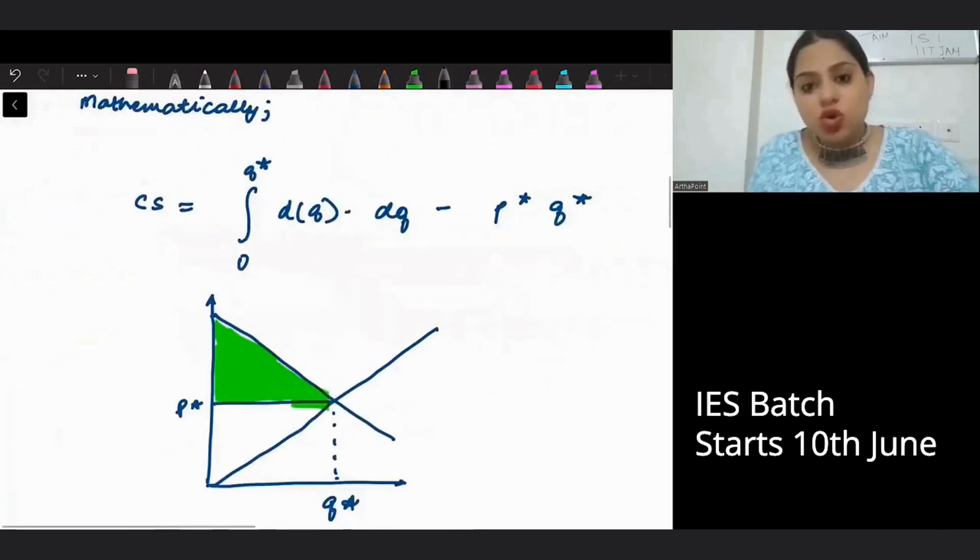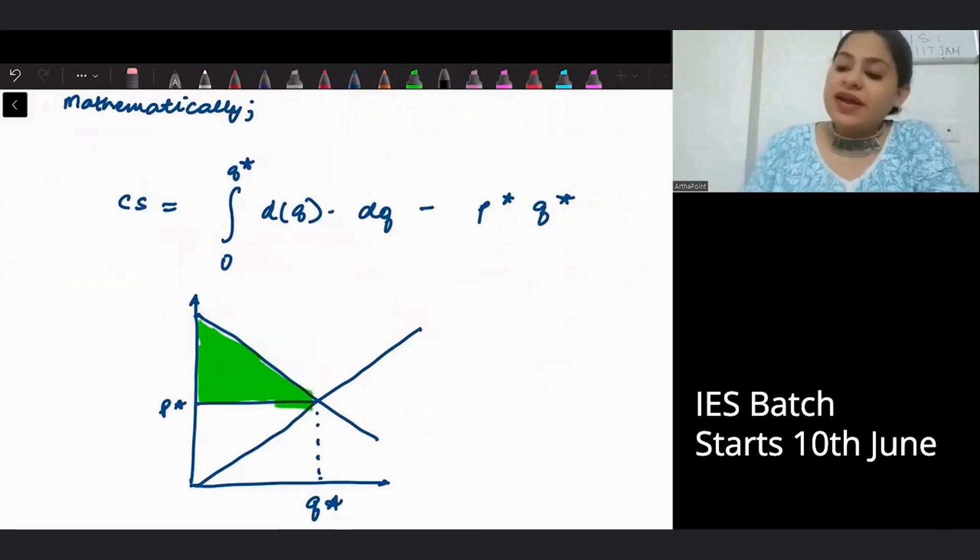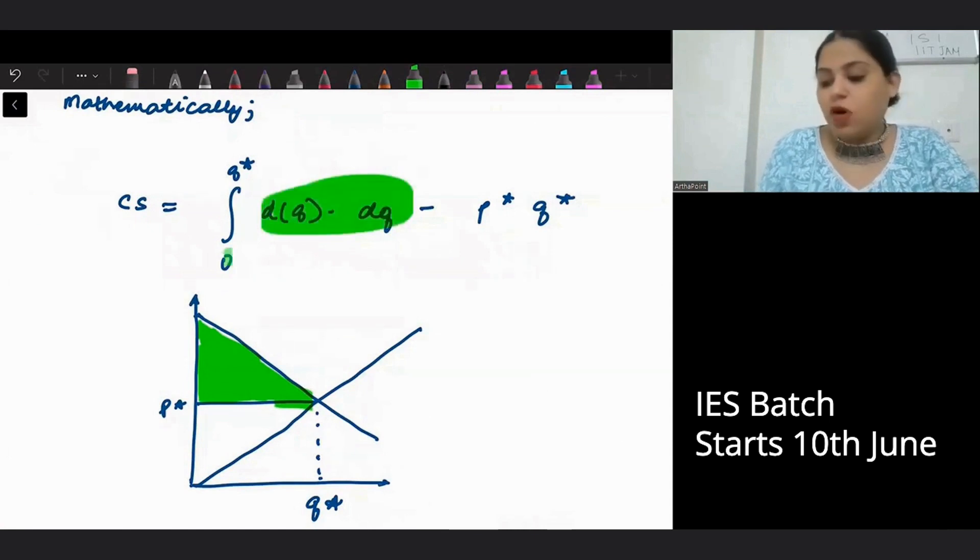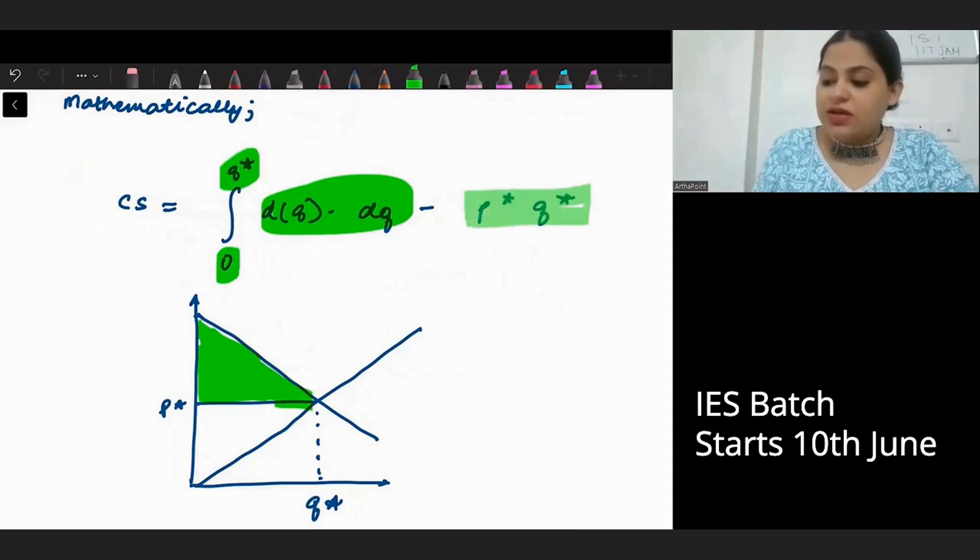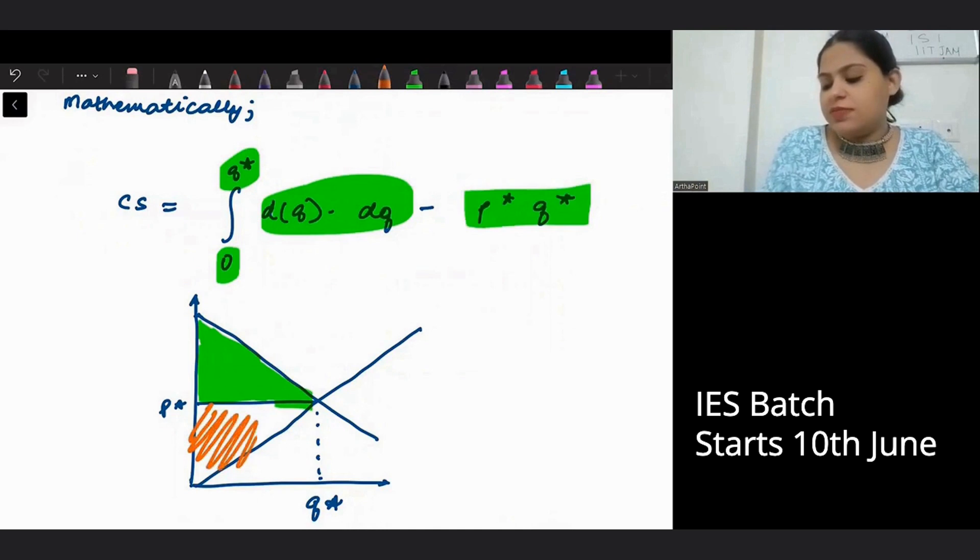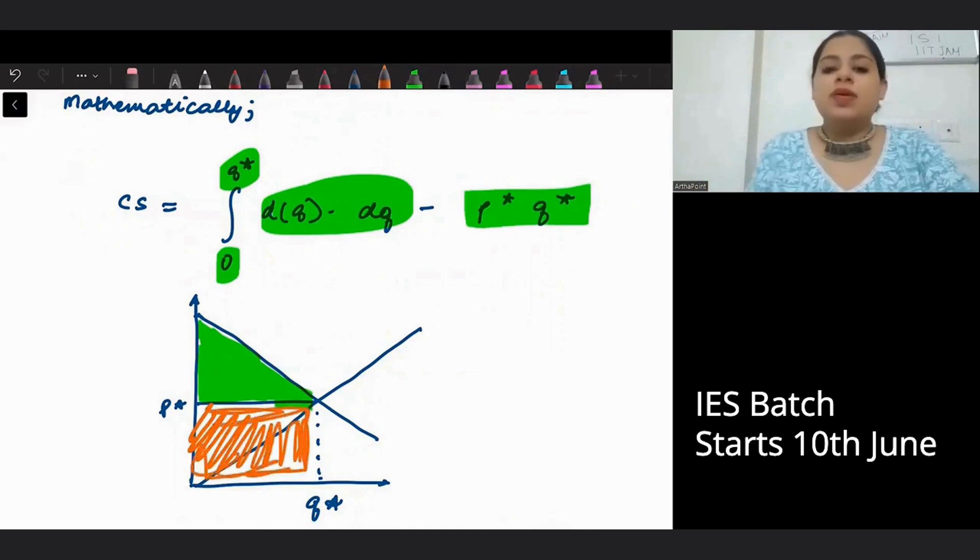Then I will be left up with this remaining area. So consumer surplus can be defined by integrating the entire demand curve from zero to equilibrium quantity and subtracting that square area, this area. By subtracting this area.